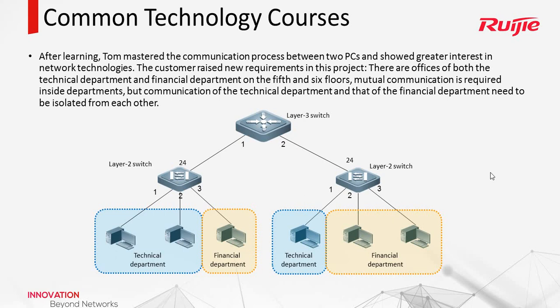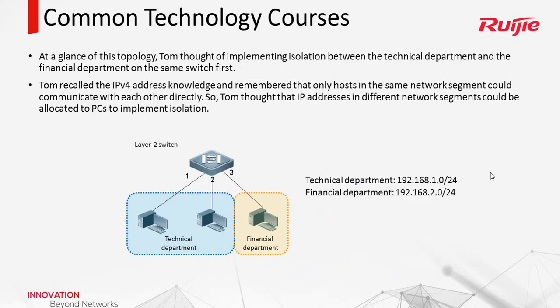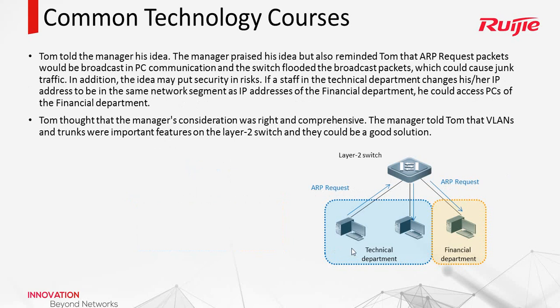How to address this problem? Let us see what Tom does. Tom reviewed IPv4 address technology and thinks we can configure different IP addresses for the two departments. For example, configure the technical department with 192.168.1.0 and the financial department with 192.168.2.0. They will have different subnets, meaning they are in different broadcast domains. When a PC in the technical department sends an ARP request, only the real receiver will reply.